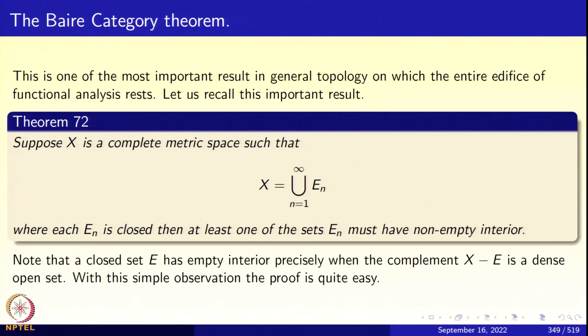The Baire Category Theorem. This is one of the most important results in general topology on which the entire edifice of functional analysis rests — this very foundational theorem, the Baire Category Theorem. As you know, in functional analysis there are four pillars: the Hahn-Banach theorem, the Banach-Steinhaus theorem, the open mapping theorem, and the closed graph theorem. The open mapping theorem, closed graph theorem, and Banach-Steinhaus theorem all rely on the Baire Category Theorem.